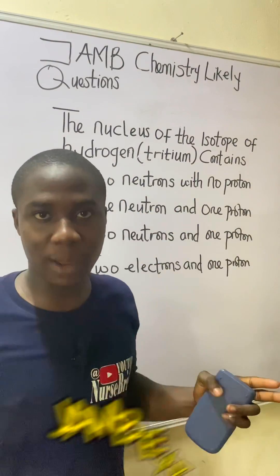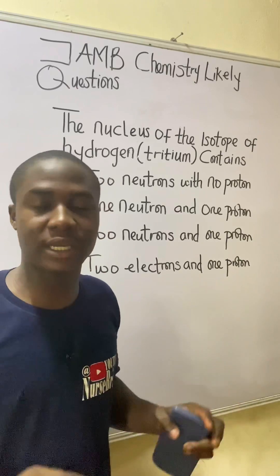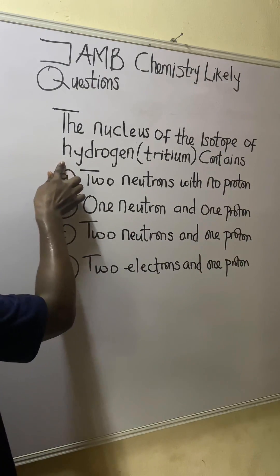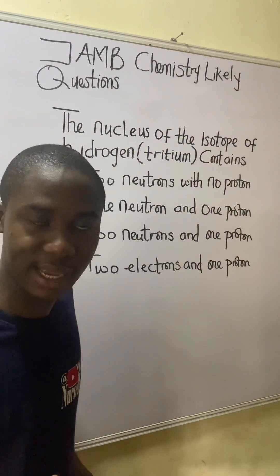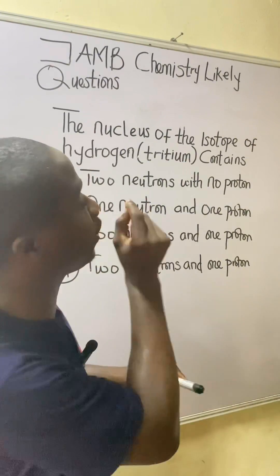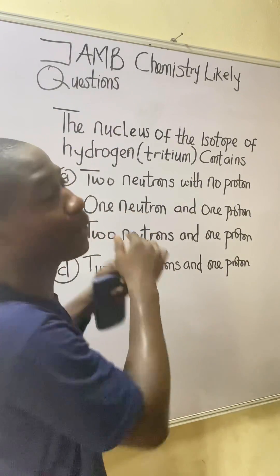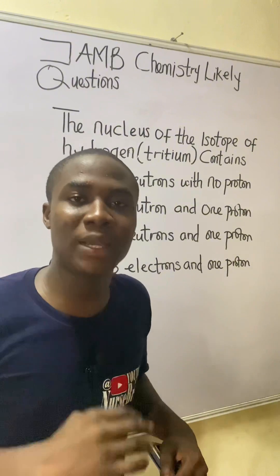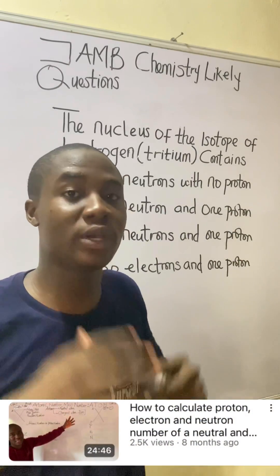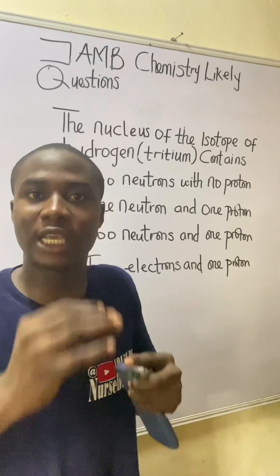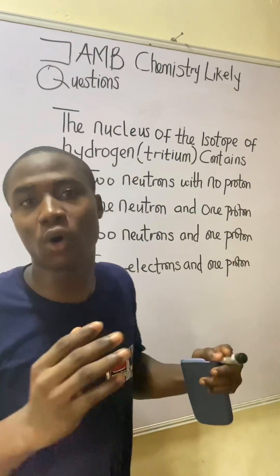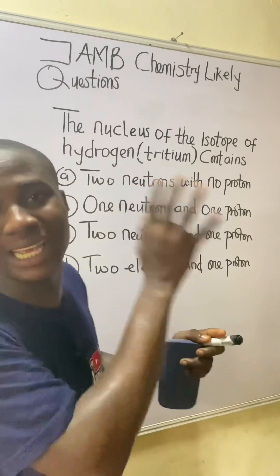If you came across this question in the JAM exam, here is how to solve it — it's actually very easy. The question asks about the nucleus of the isotope of hydrogen tritium. This question is from the topic in chemistry: determination of the numbers of protons, electrons, and neutrons of an atom, which I've covered on my YouTube channel. In this video, I'll explain in detail how to solve this question and similar practice questions.